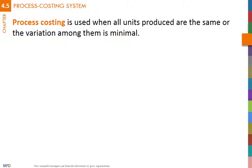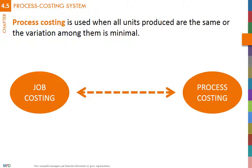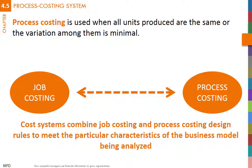Most manufacturing settings are a mix of job and process costing characteristics. For instance, cars share many pieces in common, which is typical of a process costing environment, but also have customized parts, typical of a job order costing environment. Cost systems may have certain characteristics borrowed from job costing and others from process costing.